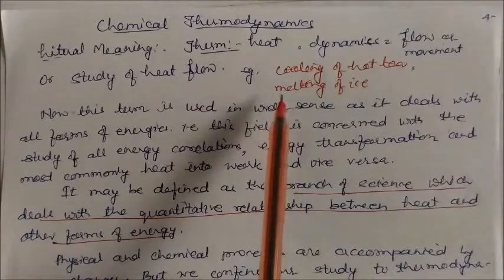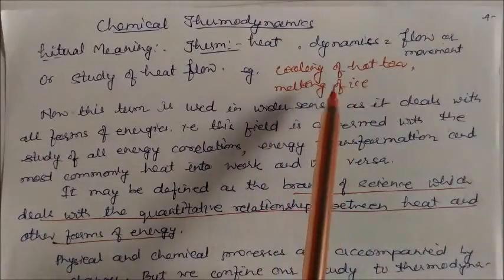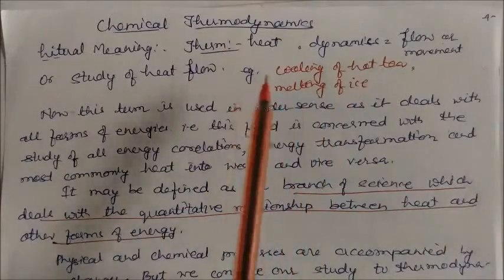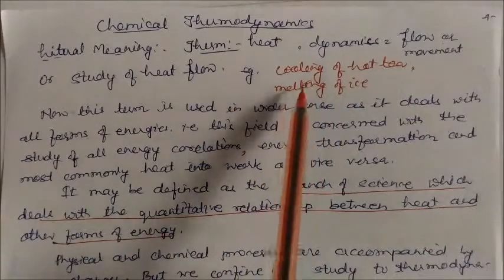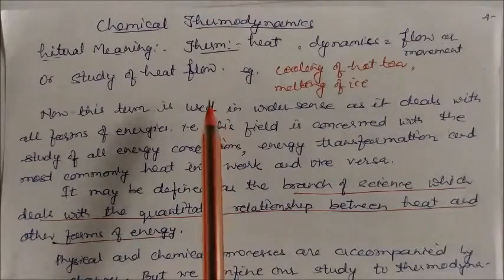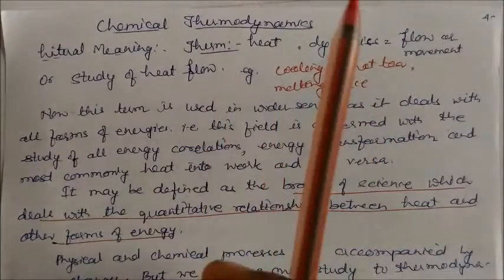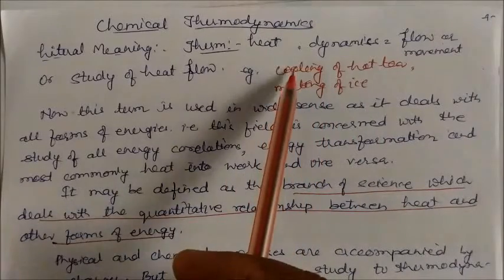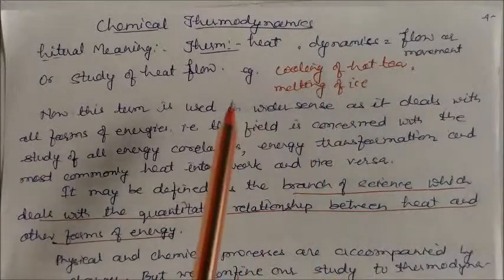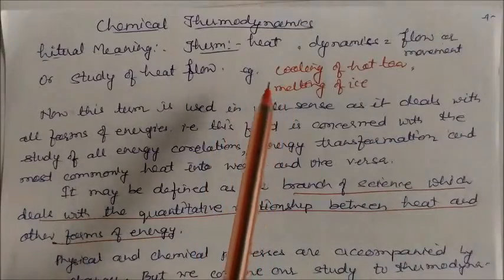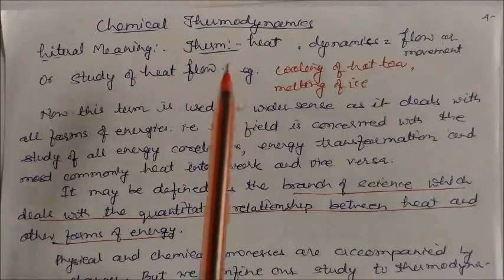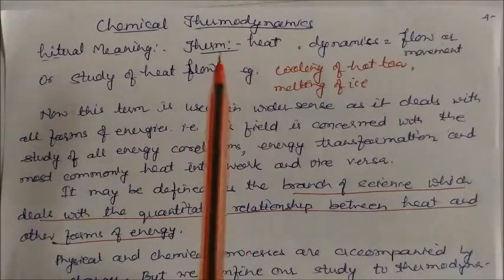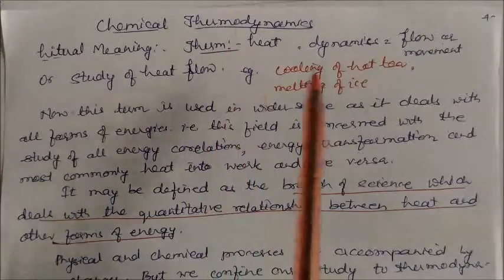Take another example: the melting of ice. If you take ice and place it at room temperature, the ice will melt down because it is absorbing heat from the surrounding. In the first case heat is released, in this case heat is absorbed. Both exothermic and endothermic phenomena occur in everyday life.